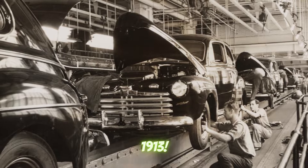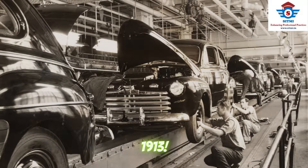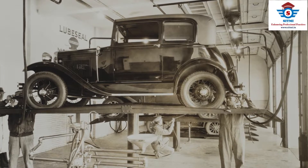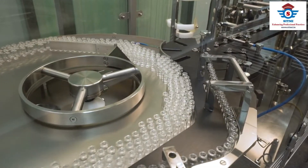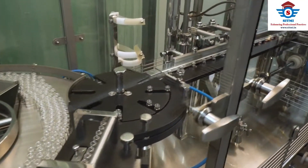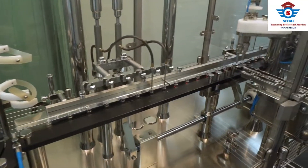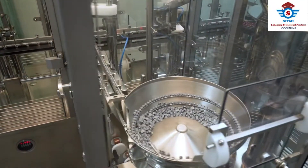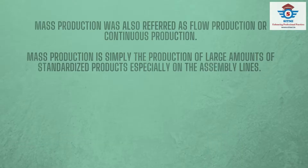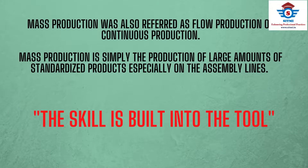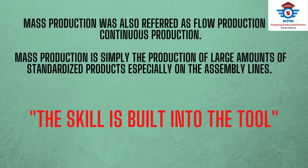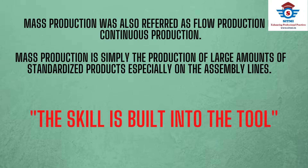In 1913, Henry Ford installed the first moving assembly line for the mass production of an entire automobile, which significantly reduced the time in building a car. Mass production took a boom in this era, and the term mass production became popularized in the late 1920s, also referred to as flow production or continuous production. Mass production is simply the production of large amounts of standardized products, especially on assembly lines. One description of mass production is that the skill is built into the tool, meaning the worker using the tool may not need the skill.